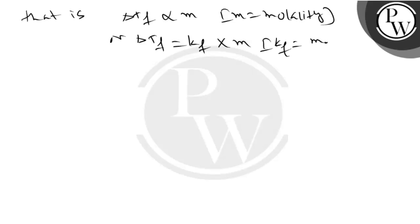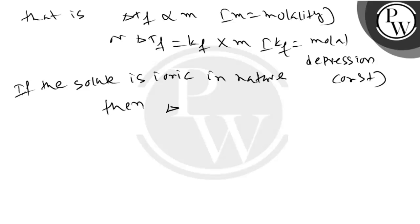That is, delta Tf versus M, where M is the molality, or delta Tf is equal to Kf into M. Kf is the molal depression constant. If the solute is ionic in nature, then delta Tf is equal to Kf into M into i. i is the vanthoff factor.